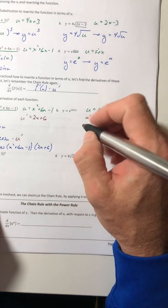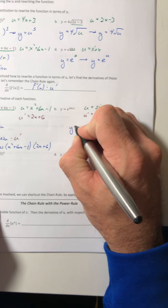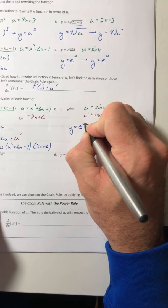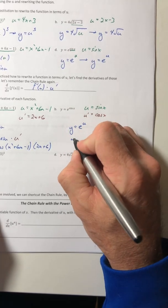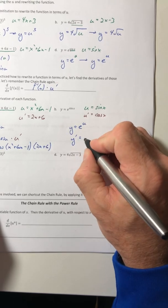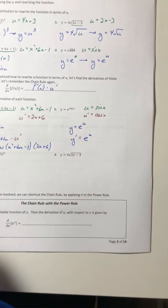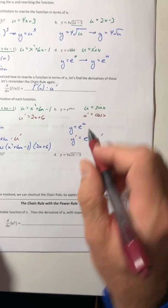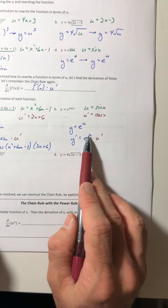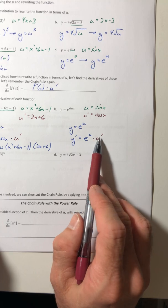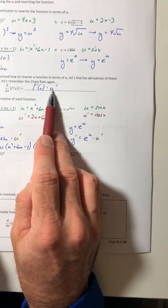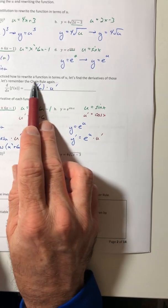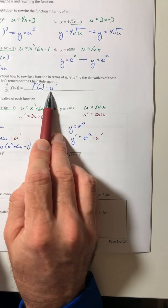So then my function in terms of u is e to the u. So the derivative is e to the u times u prime. So the derivative of e to the u is e to the u and then times the u prime. We just followed this right here. The derivative of the function times the u prime.